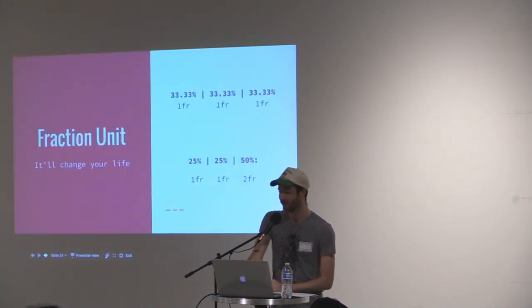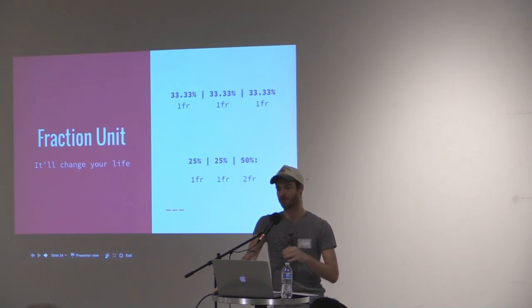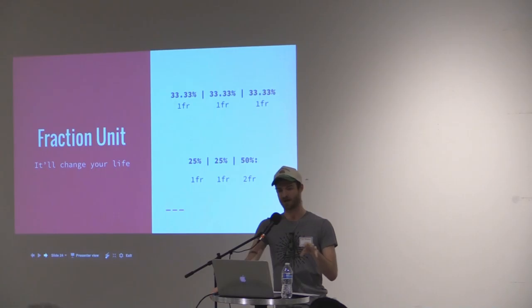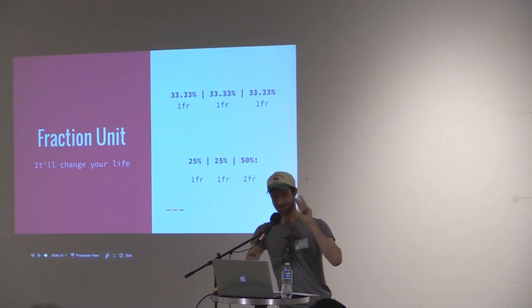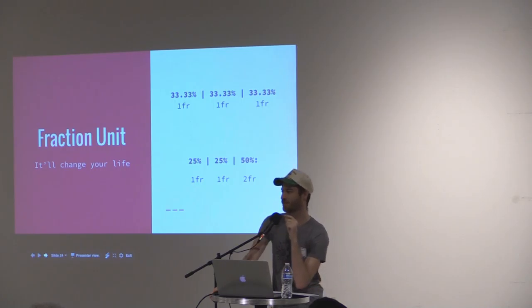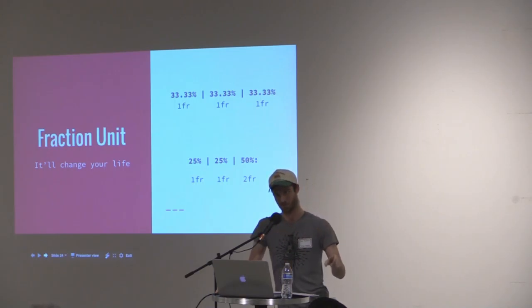You might be wondering — what the hell is an fr? It's a new unit coming with grid called the fraction unit, and it'll change your life. 1fr stands for fraction unit or fraction remaining. It's calculated by figuring out how much space is currently available and dividing it evenly by fractions. When I say 1fr, that means one equal portion. Three 1frs over 100% width makes a 33.33% times three grid — three equal portions. If you change one to 2fr, the math shifts: one portion, one portion, two portions — giving you 25%, 25%, 50%, because the last one needs to be twice as big.